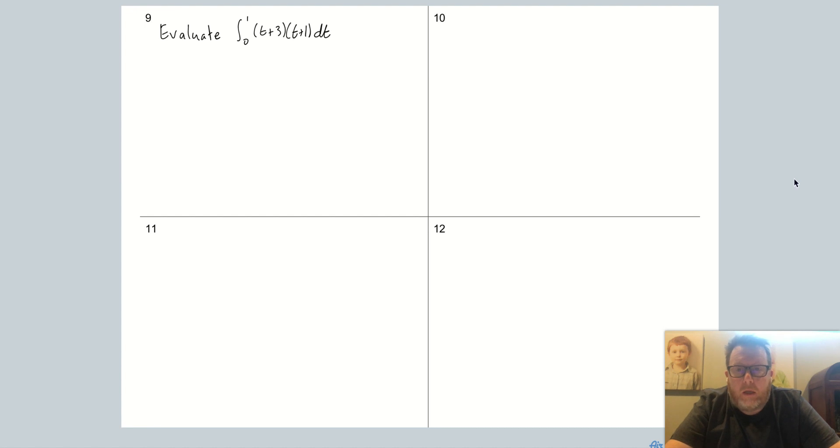Okay, so in this video we've got a very specific function: (t+3) times (t+1). You can say f(t) equals that if you like, and we need to work out what the integral of that function is between the values of t equals zero and t equals one.